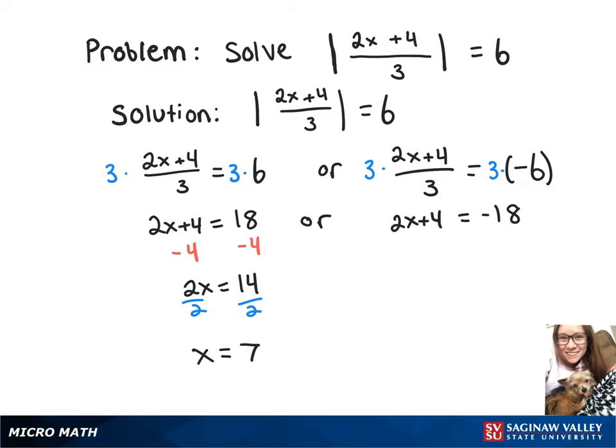Now we're going to subtract 4 from both sides again. That's going to give us 2x equals negative 22. Now we're going to divide by 2, and that gives us our other answer of x equals negative 11.